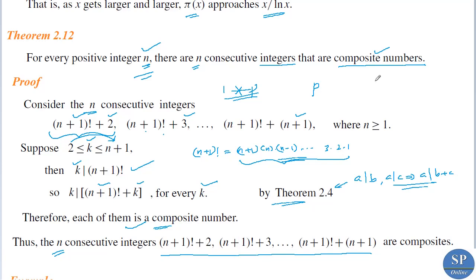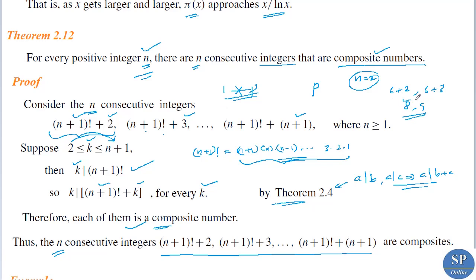For example, taking n = 2: we can find 2 consecutive composite numbers. The first is (2+1)! + 2 = 3! + 2 = 6 + 2 = 8, and the second is 6 + 3 = 9. So 8 and 9 are 2 consecutive composite numbers.